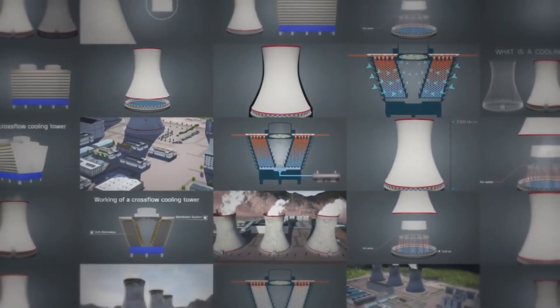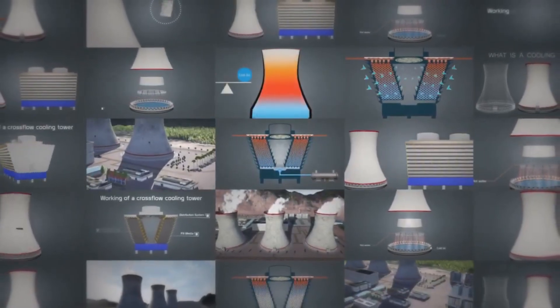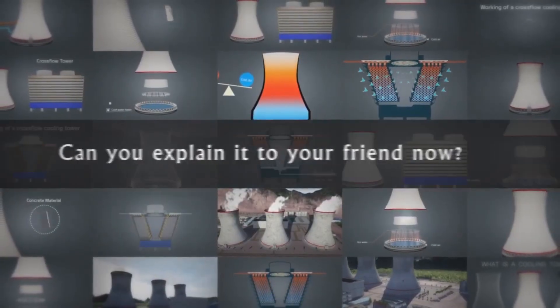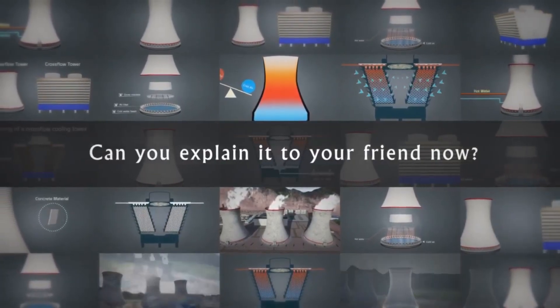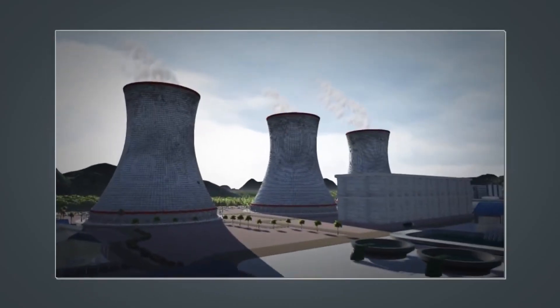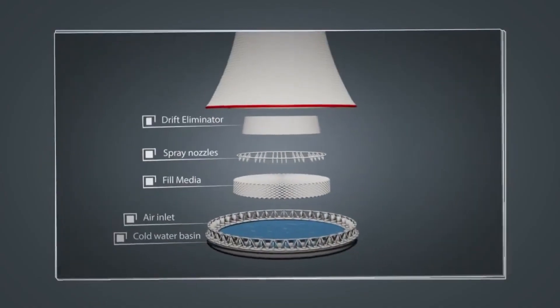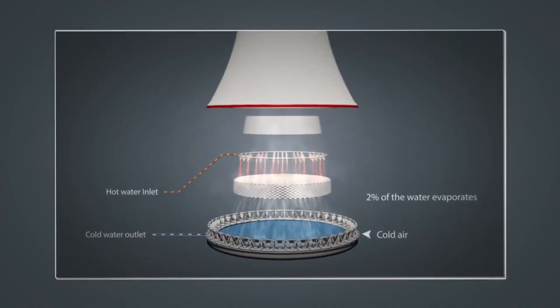Alright, now that you have understood the working of a cooling tower in nuclear power plants, can you explain it to your friends? Recap. In this lesson, you learnt about different types of cooling towers, their components, and the working principle.